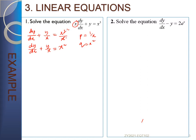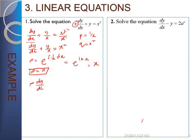The integrating factor: the coefficient of y is 1/x, so rho equals e^(∫(1/x)dx) equals e^(ln x), which equals x. So rho equals x. We now multiply rho (x) to each term: x·dy/dx plus x·(y/x) equals x·x², giving x·dy/dx plus y equals x³.